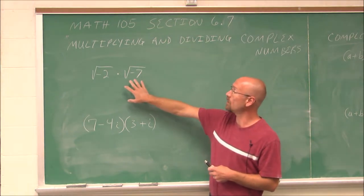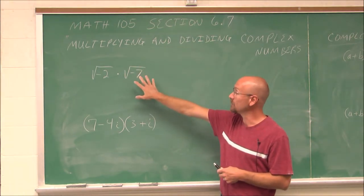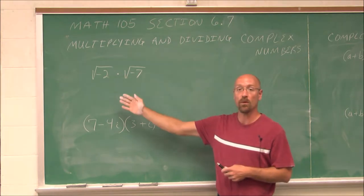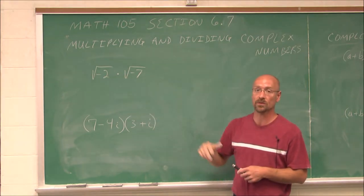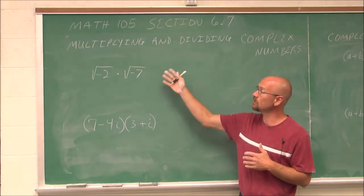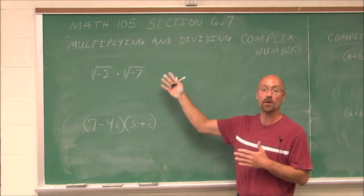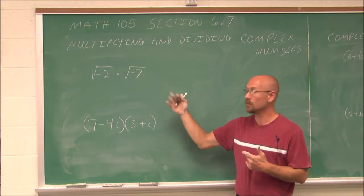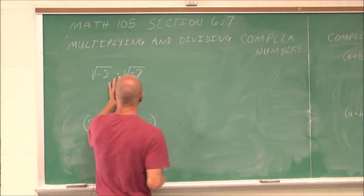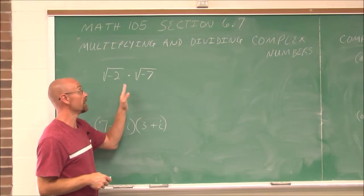Now, if we recall when we simplified negative radicals, we just pulled out that i — the square root of negative 1. That should be the first thing we do: simplify these values before we do any mathematical operations.